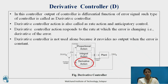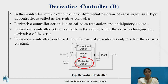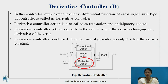Next, the derivative controller: the output of the controller is a differential function of the error signal. This type of controller is also known as a derivative controller. The control action is also called rate action and anticipator. Derivative control action responds to the rate at which the error is changing, that is, the derivative of the error. Derivative controller is not used alone because it provides no output when the error is constant. It is used either along with a proportional-integral controller or with a proportional controller only.